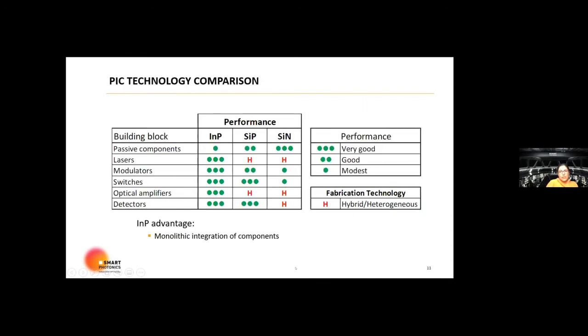What you're seeing in this table is a set of generic building blocks that's required to create a device or PIC, like lasers, modulators, switches, optical amplifiers, detectors, and passive components. What you'll notice is indium phosphide is able to offer superior performance in all of these building blocks except for these passive components. And that's because indium phosphide has got higher loss when it comes to passive components compared to the other two platforms being silicon photonics and silicon nitride. The other thing you'll notice here, as I'm sure you already know, is for both silicon photonics and silicon nitride, you'll have a hybrid, you'll need to have a hybrid or heterogeneous technology.